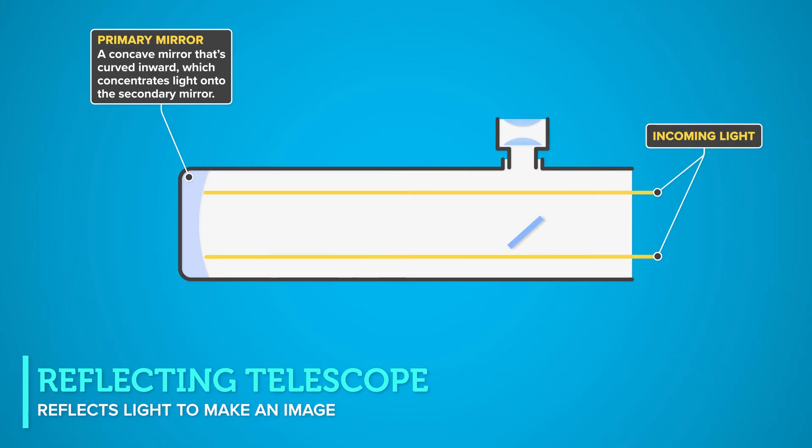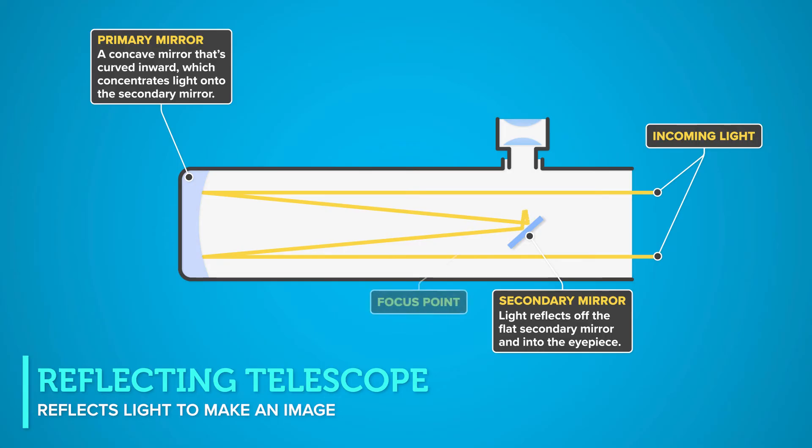The concave primary mirror concentrates the light onto the secondary mirror. The light reflects off the flat secondary mirror and into the eyepiece.